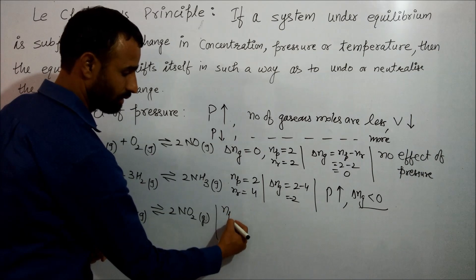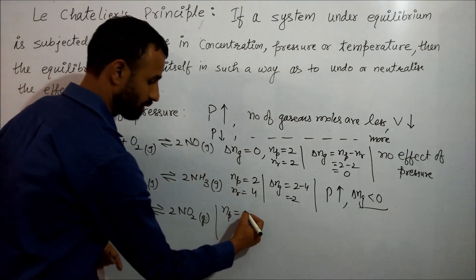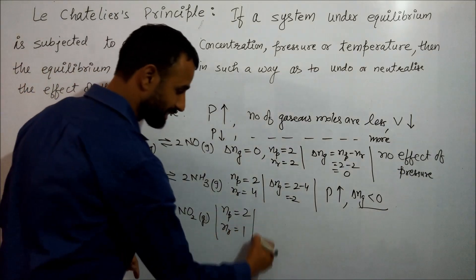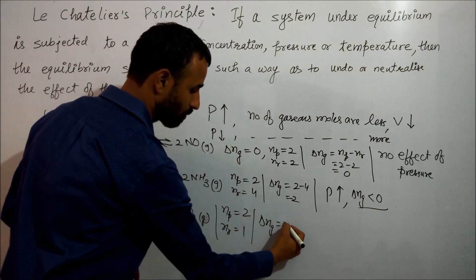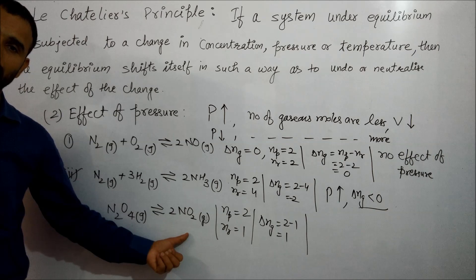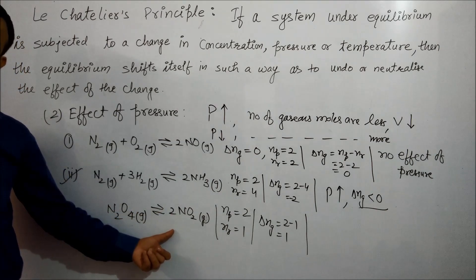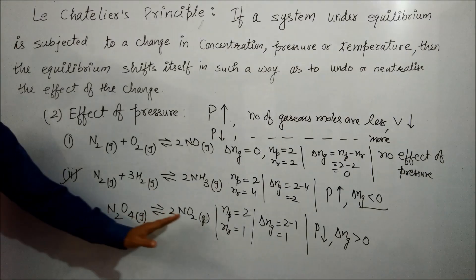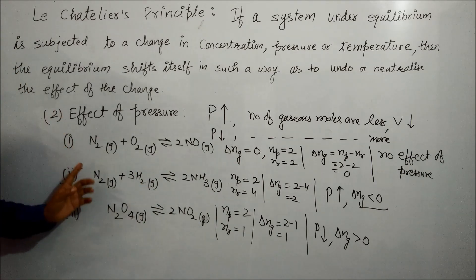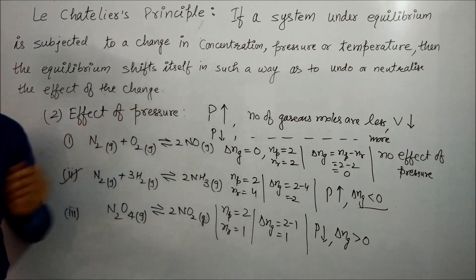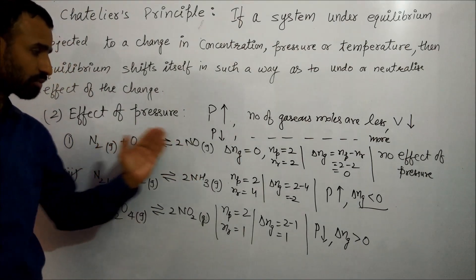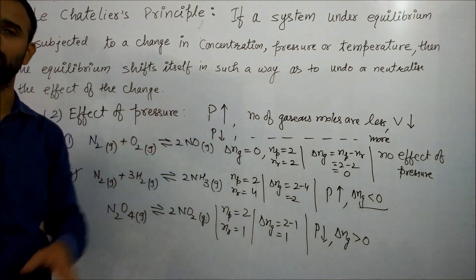In the third case, number of gaseous moles of product equals 2 and of reactant equals 1, so delta ng equals 2 minus 1 equals 1. Number of gaseous moles increases, so such a reaction is favored by decrease in pressure. Decrease in pressure favors the side with more gaseous moles, and increase in pressure favors the side with fewer gaseous moles. In the first case, gaseous moles are the same on both sides, so there is no effect of pressure.